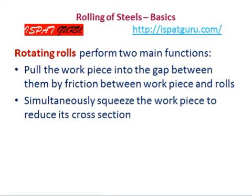Rotating rolls perform two main functions: they pull the workpiece into the gap between them by friction between the workpiece and rolls, and they simultaneously squeeze the workpiece to reduce the cross-section.